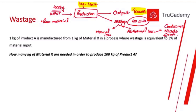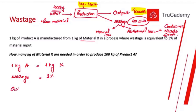Whenever we need to decide how much raw material to buy, it is important to consider wastage. For example: one kilogram of Product A is manufactured from one kilogram of Material X, in a process where wastage equals three percent of the material input. How many kilograms of Material X are needed to produce an output of 100 kilograms of Product A?